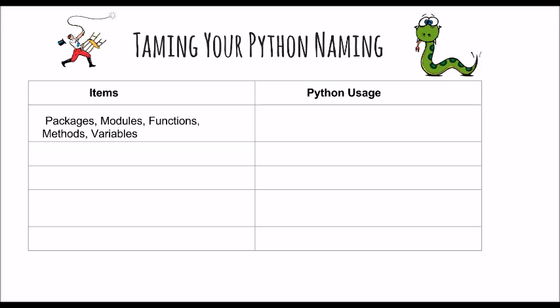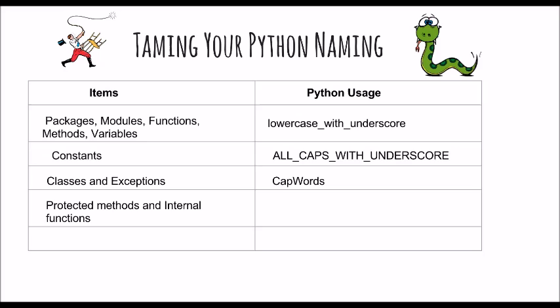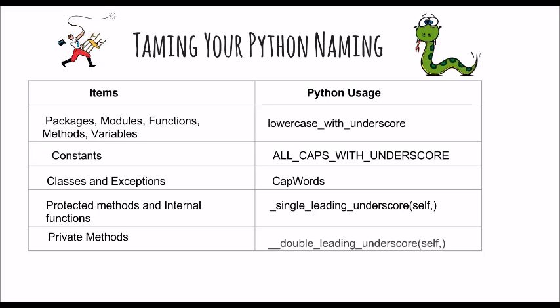Packages, modules, functions, methods, and variables are all used in Python in lowercase with underscores. Constants are written in all uppercase with underscores. Classes and exceptions use initial words in caps with no spaces or underscores — the initial letter of each word is capitalized with no space in between. Protected methods and internal functions are declared with a single leading underscore; private methods use double leading underscores.